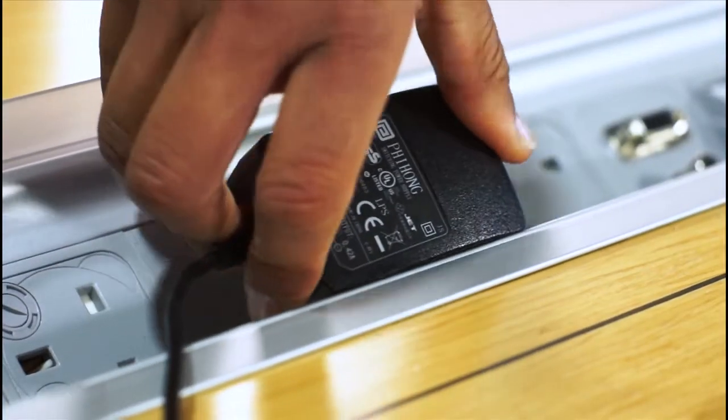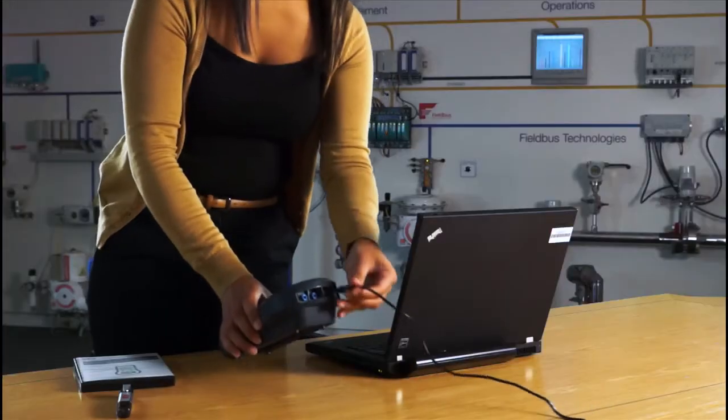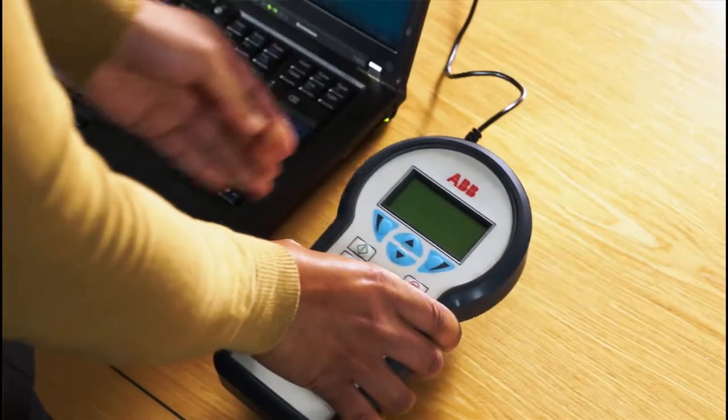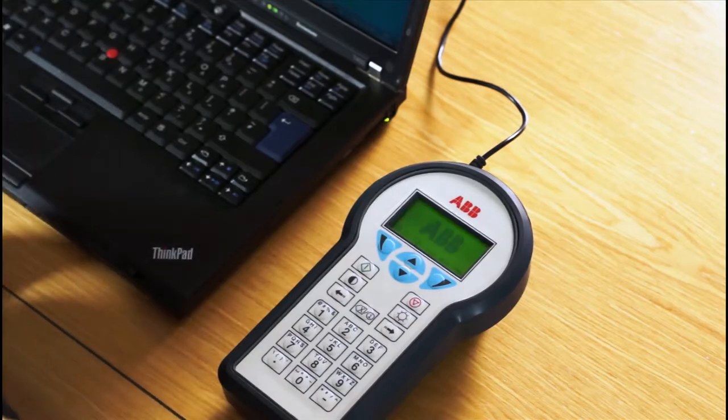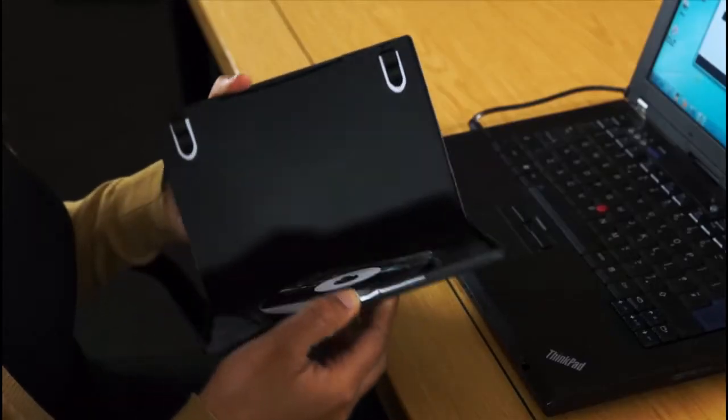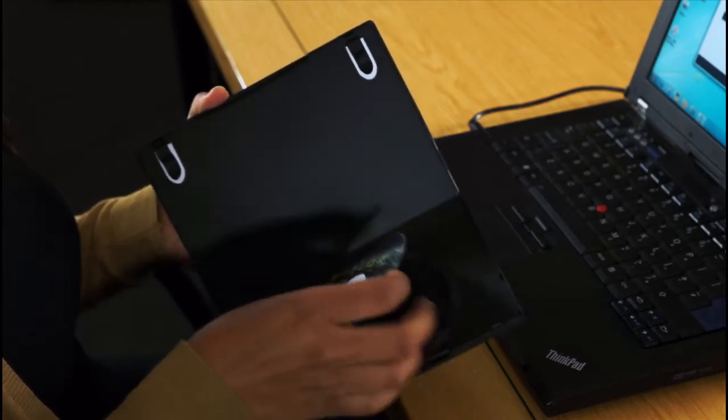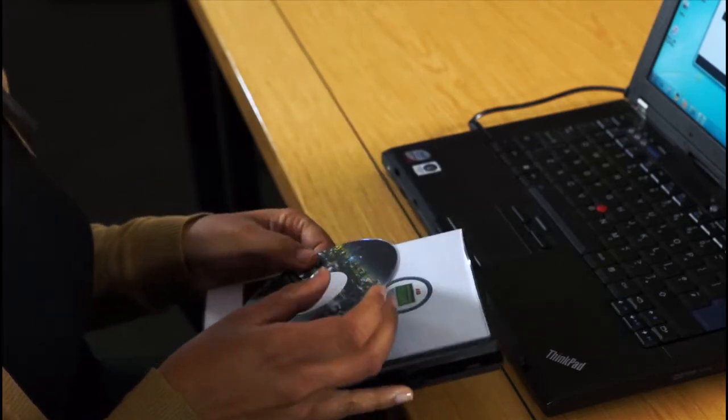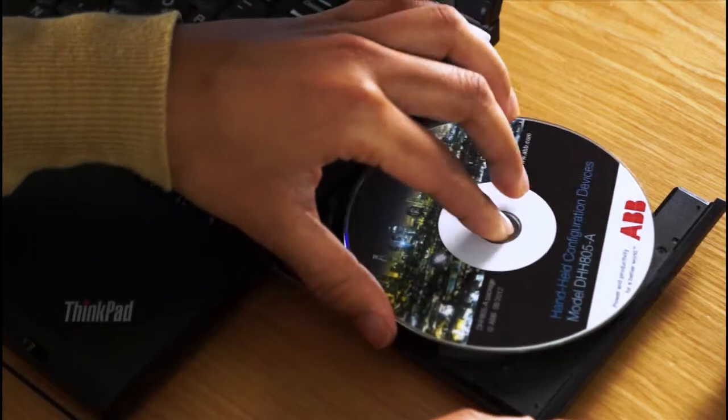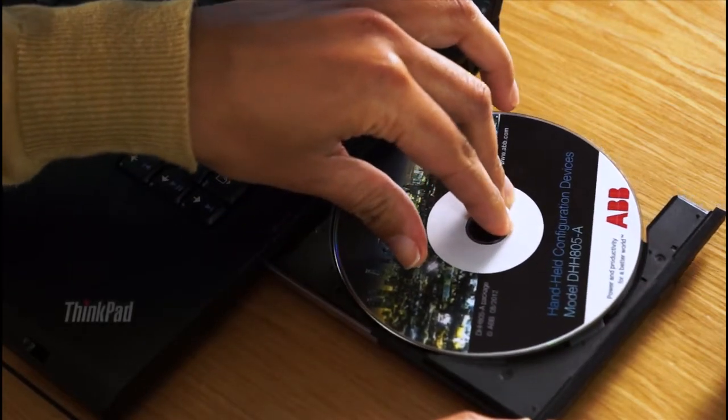Setting up the DHH805 is simple. After connecting the battery charger, use the DVD supplied to upload the software needed for the configurator to your PC. This software includes everything needed to set up the DHH805, including device descriptions for a wide range of HART devices.